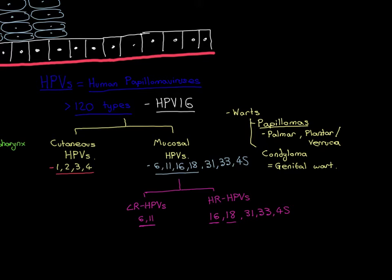Remember back to basic virus structure: you have the genome at the centre of the virus particle, and then a proteinaceous protection shell around that, known as the capsid. Around many capsids you then have an envelope. Influenza virus and human immunodeficiency virus — these two infamous viruses — have an envelope: a phospholipid bilayer around the capsid stolen from the host cell membrane. Human papillomaviruses do not have an envelope.